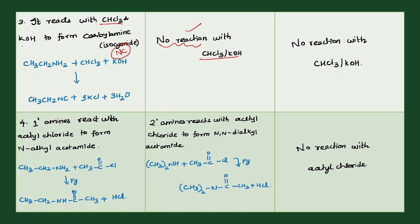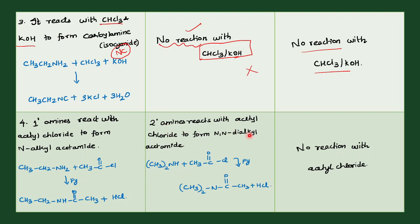So the differences: primary amine reacts with HNO2 to form primary alcohol; secondary amine reacts with HNO2 to form N-nitrosamine; tertiary amine reacts with HNO2 to form a salt. Primary amine reacts with CHCl3 and KOH — that is chloroform and potassium hydroxide — to form the isocyanate (N≡C group). That is one key difference. The fourth difference: primary amine reacts with acetyl chloride to form N-alkyl acetamide.